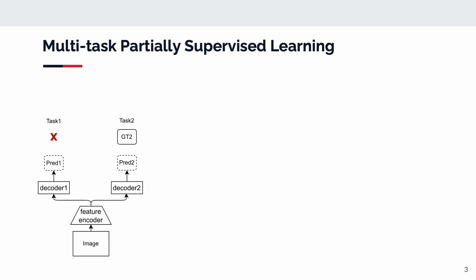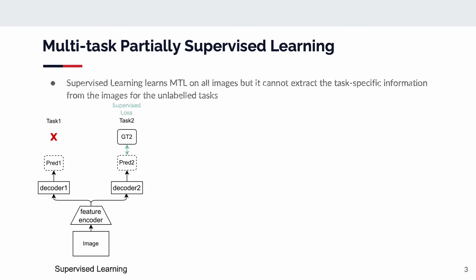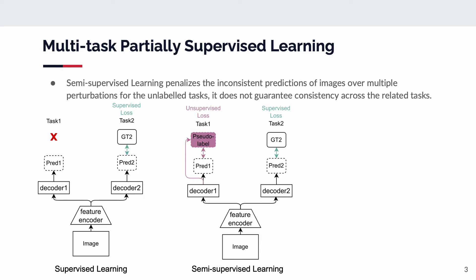In multi-task partially supervised learning, given an image that is labeled for task 2 and does not have a label for task 1, a simple strategy is to apply supervised loss on labeled tasks. This learns a multi-task learning model on all images, but it cannot extract the task-specific information from the image for the unlabeled tasks. One can extend the supervised learning baseline by penalizing inconsistent predictions of images over multiple perturbations for unlabeled tasks, but it does not guarantee consistency across related tasks.